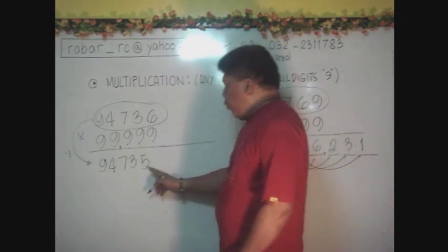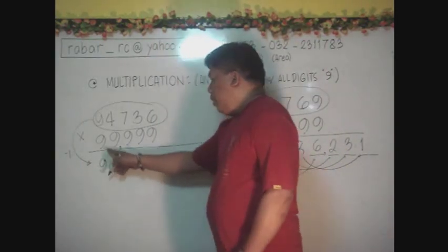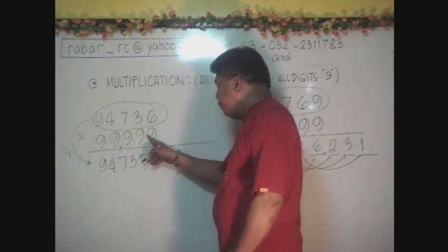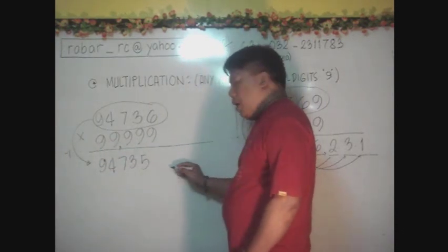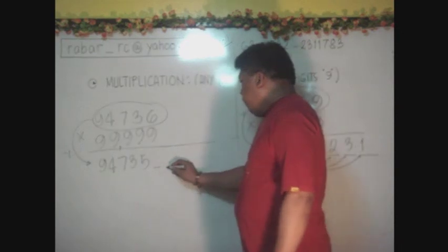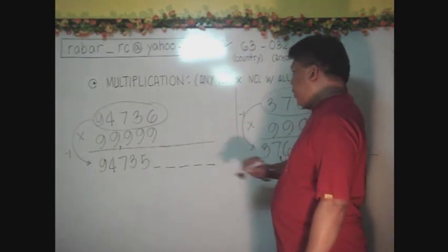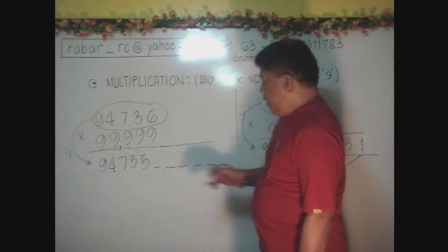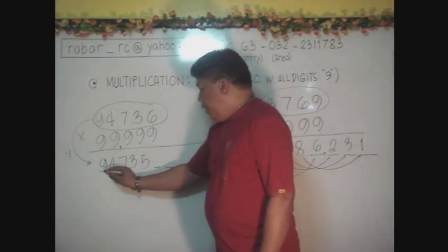In the sense that we have 5 digits here, or maybe you can refer it here, 5 digits or 5 nines, we need to have 5 more digits to complete the answer. First digit is coming from here.